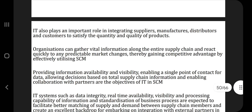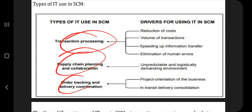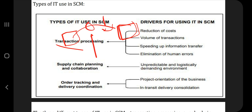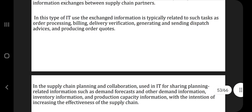Then we have: what is the contribution of information technology in supply chain management? You can see here — transaction processing, supply chain planning, order and tracking, and delivery coordination. The sub-points for drivers of using IT in SCM are given here. You can mention these in your own words as well. For example, when a product gets delivered from Amazon warehouses to your home, it goes through many steps — technology helps you track it and know where the item is. That's how IT contributes, and that's what you have to explain in your own words.